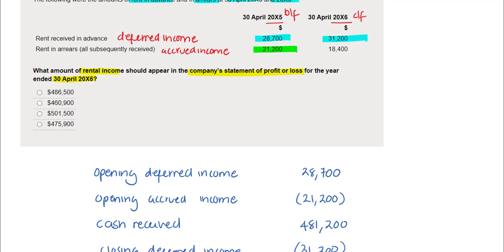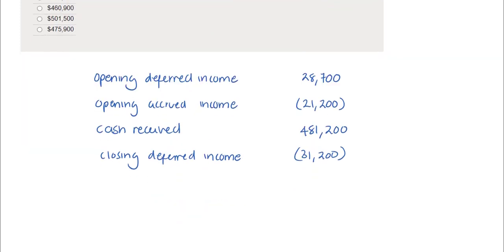Next, and finally for this question, we deal with the closing accrued income of £18,400. This represents amounts that are outstanding for the current year and should be included in the rental income balance for the current year.